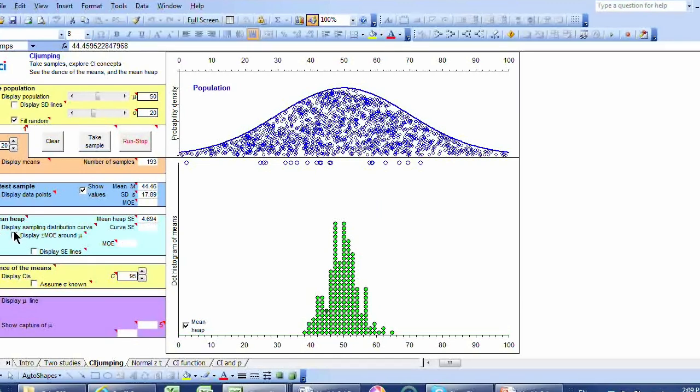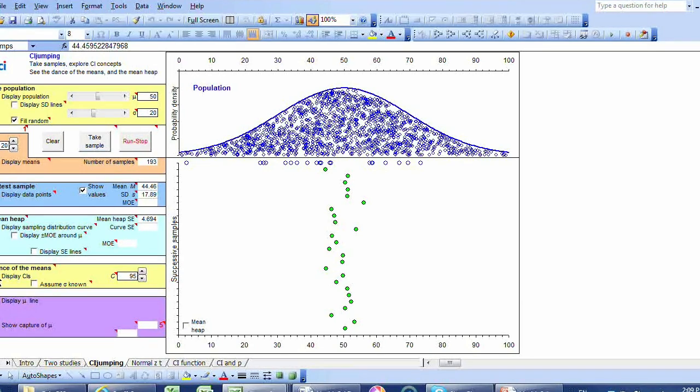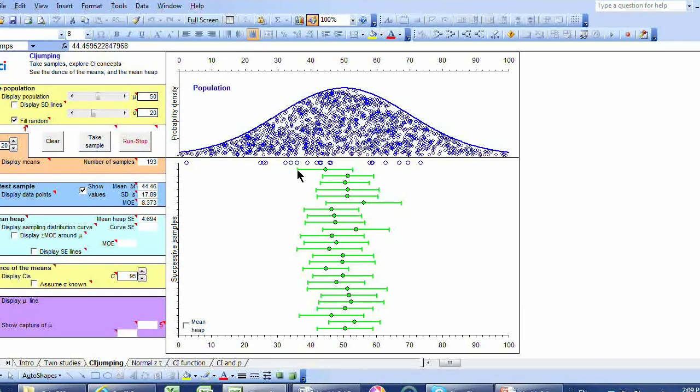Let me turn this off and show the dance of the means. Now, I'm going to draw an interval here, plus and minus MOE either side of my sample mean. And this is the 95% confidence interval. So if most of these sample means are within MOE of the population mean, that implies that in most of these cases, this population mean will be within MOE of the sample mean. If A is close to B, B is close to A.